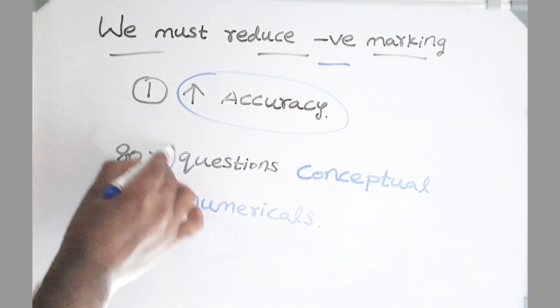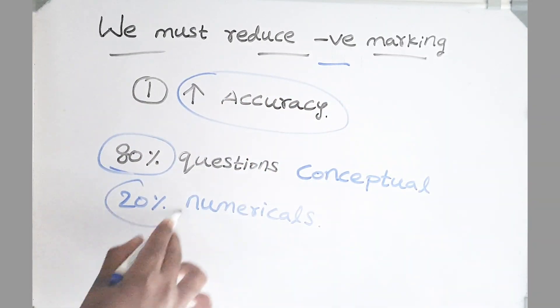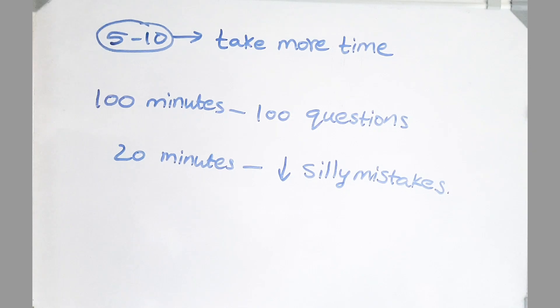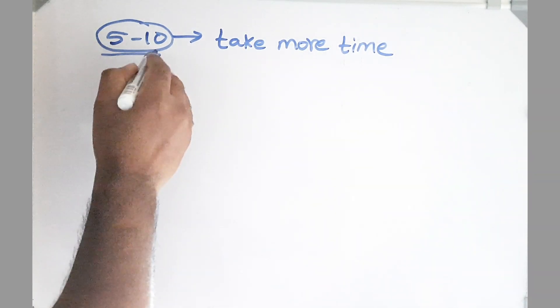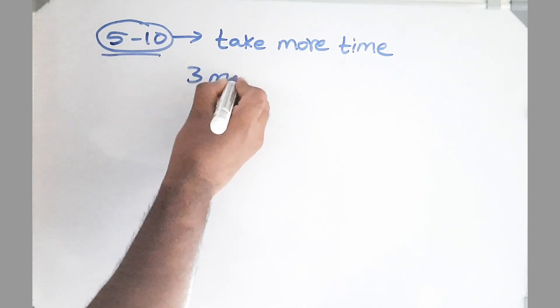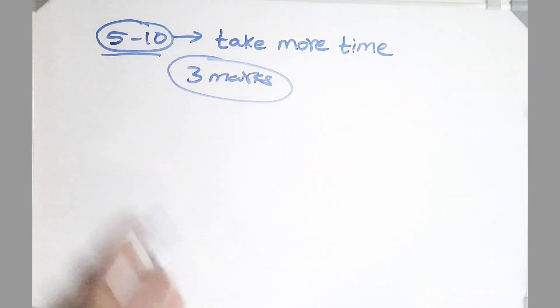Out of the 100 questions, 80 questions are conceptual and 20 questions are numerical. And out of these, friends, 5 to 10 questions take more time than the other questions. You must realize you need to skip these questions because these consume more time, and here every question gives us 3 marks. So you should be able to ignore the questions which consume more time.